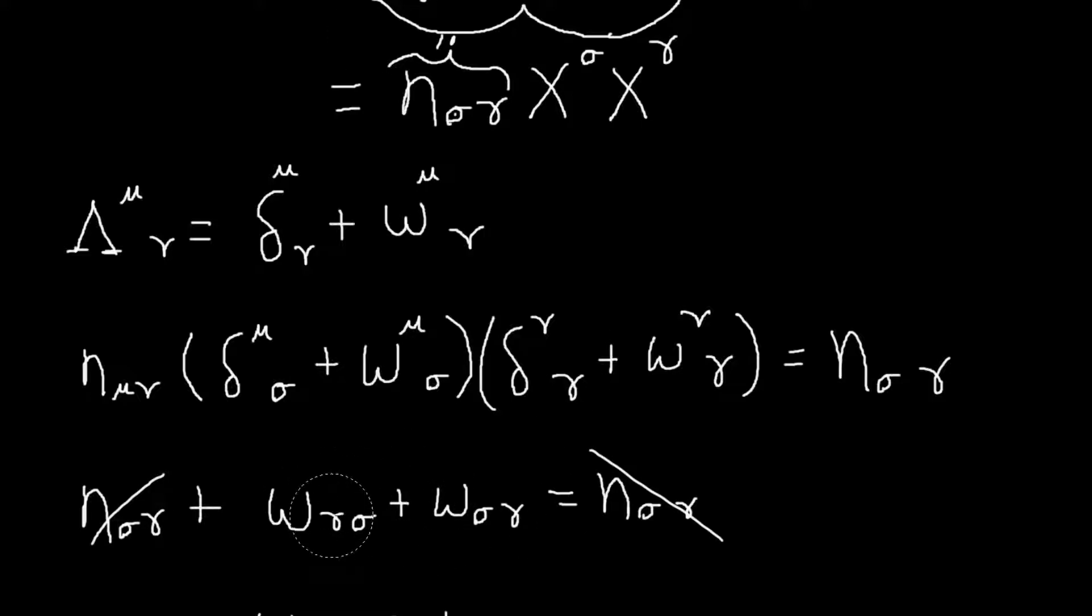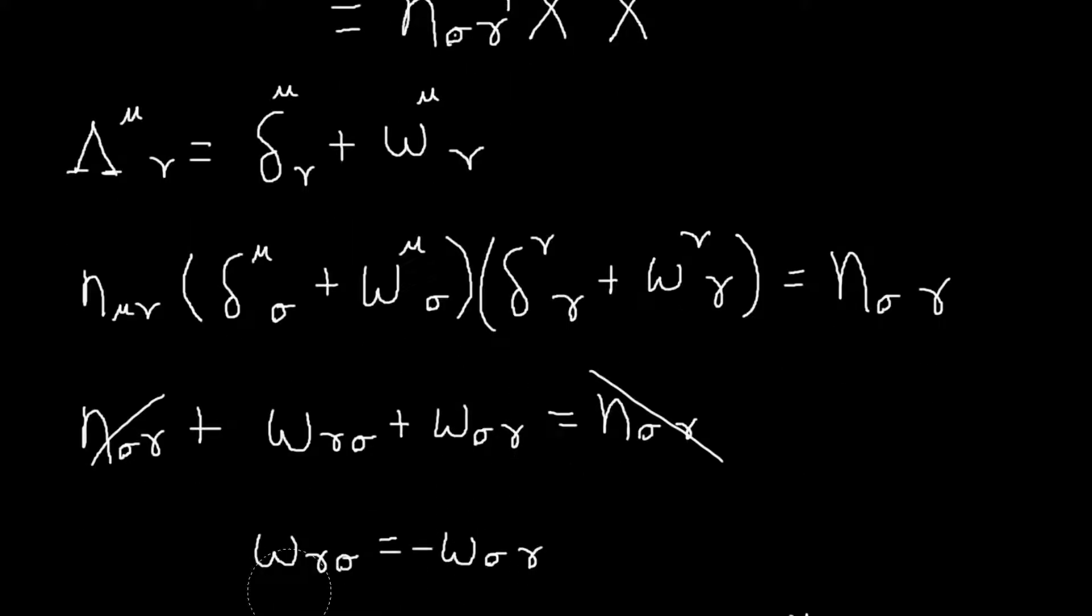So I just need this plus this to be zero. Or in other words, w gamma sigma equals minus w sigma gamma. So w is antisymmetric in these two indices.